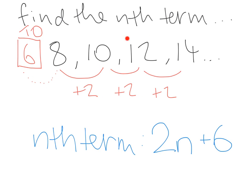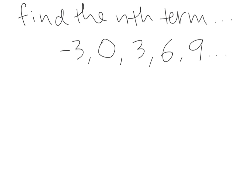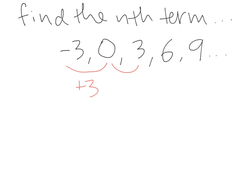Now we have the sequence -3, 0, 3, 6, 9. Again, we want to find the nth term. First, investigate whether it's arithmetic or linear. To get from -3 to 0 we add 3, from 0 to 3 we add 3, from 3 to 6 we add 3, and from 6 to 9 we add 3. It is arithmetic because it has a constant first difference.